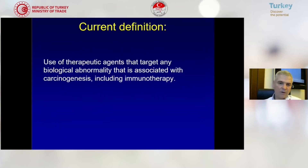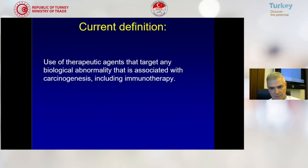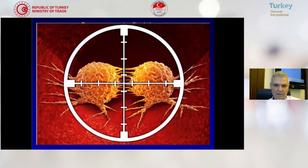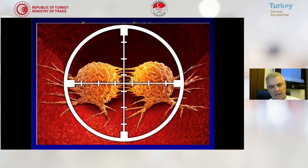So what is the current definition? The use of therapeutic agents that target any biological abnormality that is associated with carcinogenesis, including immunotherapy. So we want to hit the target with that gene if we produce a specific drug for that mutated gene.